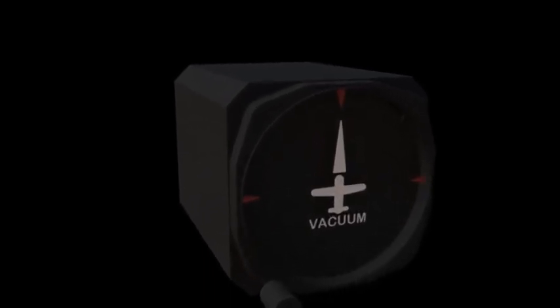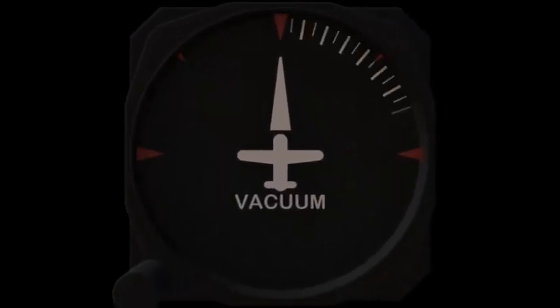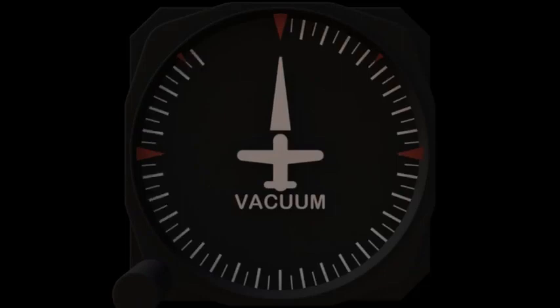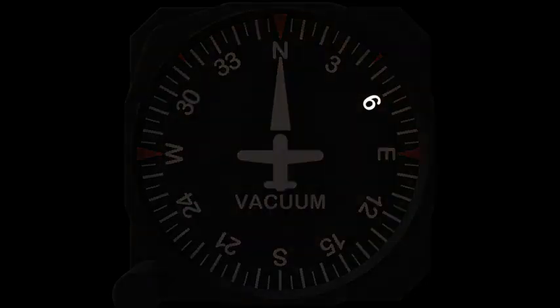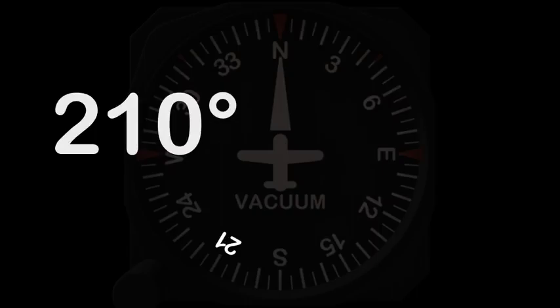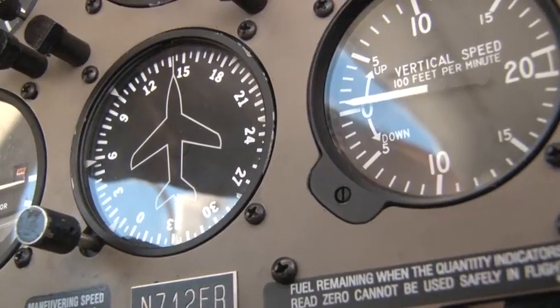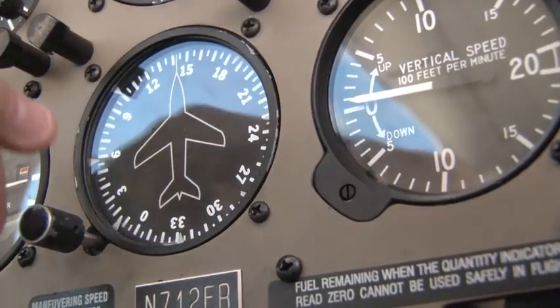The heading indicator senses the airplane's movement and displays heading based on a 360 degree azimuth in 5 degree increments. The tick marks are labeled every 30 degrees with the final zero omitted. For example, the number 6 indicates a heading of 60 degrees. 21 indicates a heading of 210 degrees.